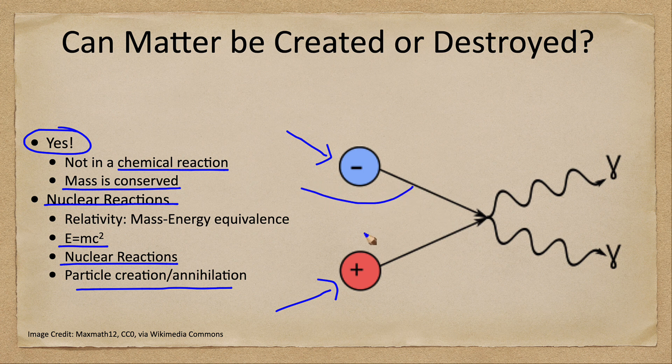Those are antimatter, so the electron is ordinary matter, the positron is antimatter. When they meet, they collide and all of their mass is immediately converted to energy. So you have in this case a couple of gamma rays heading out.